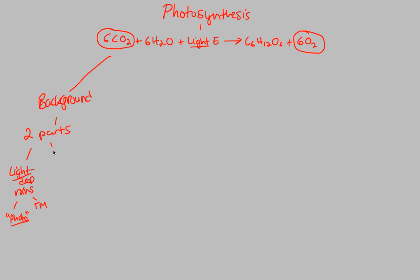The other part is the carbon fixation reactions. Some people refer to these as the light-independent reactions, but that's a nuance — they rely on the products of the light-dependent reactions. The best way to describe them is the carbon fixation reactions — this is the synthesis part of photosynthesis. Carbon fixation simply means synthesizing a carbon-based compound, which, referring back to our equation, is glucose, or simple sugars.